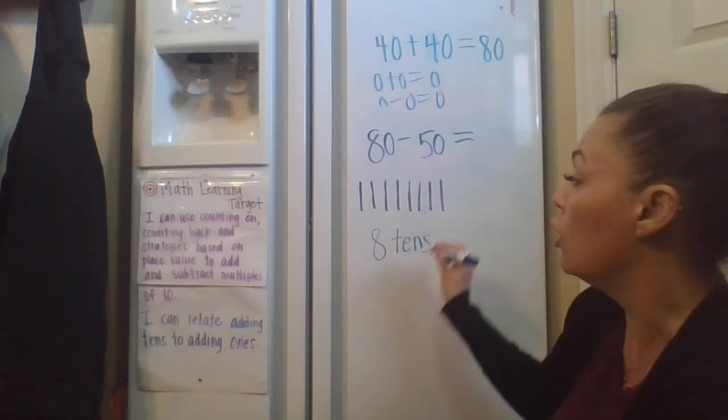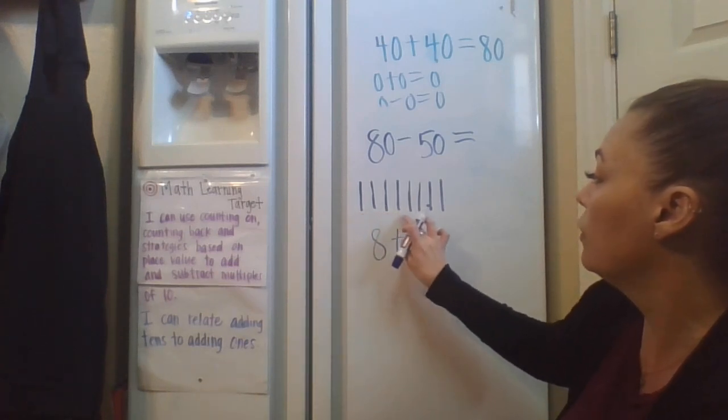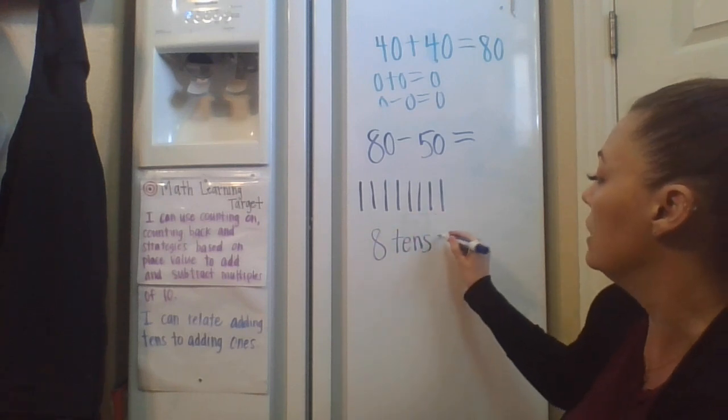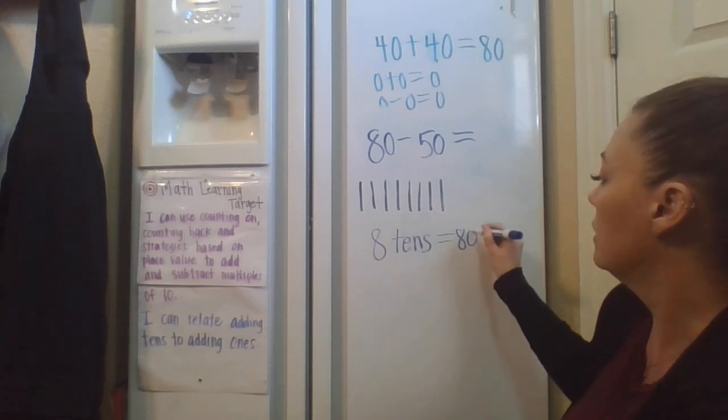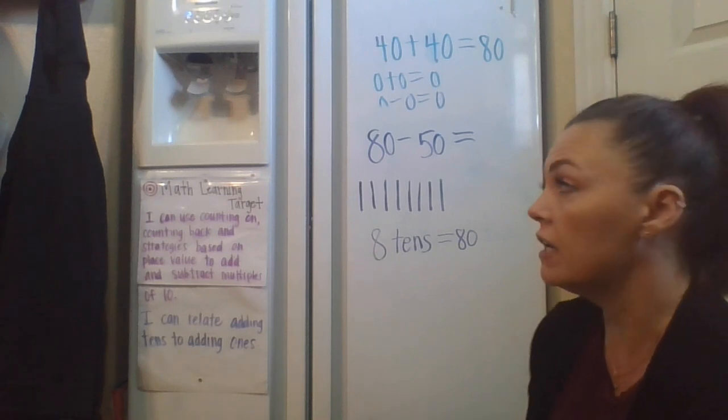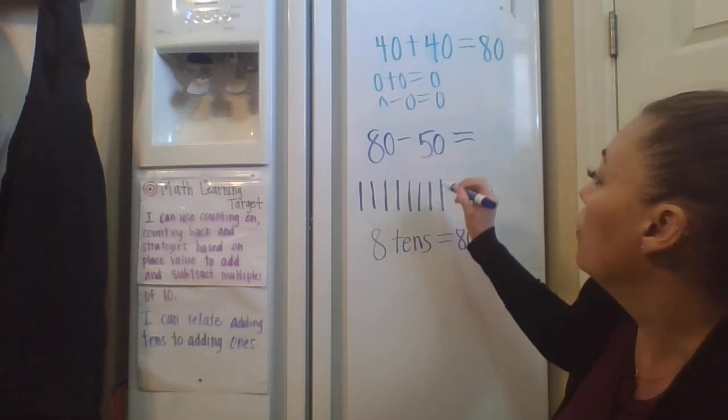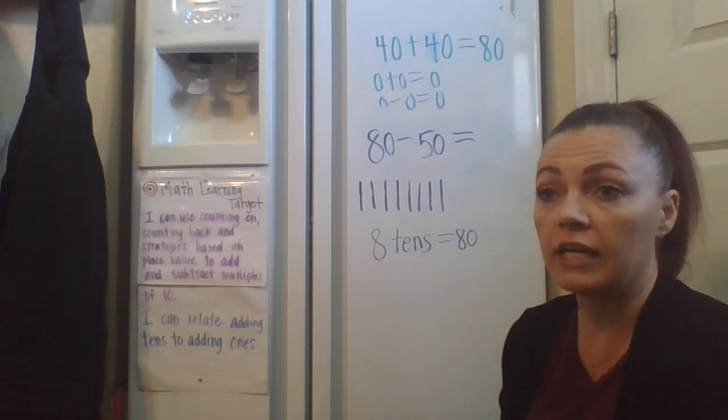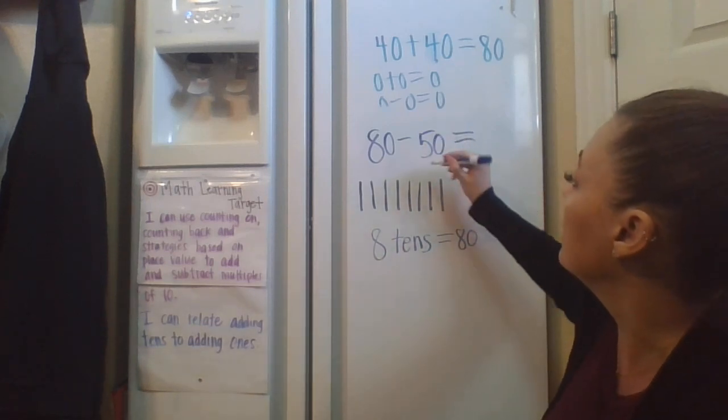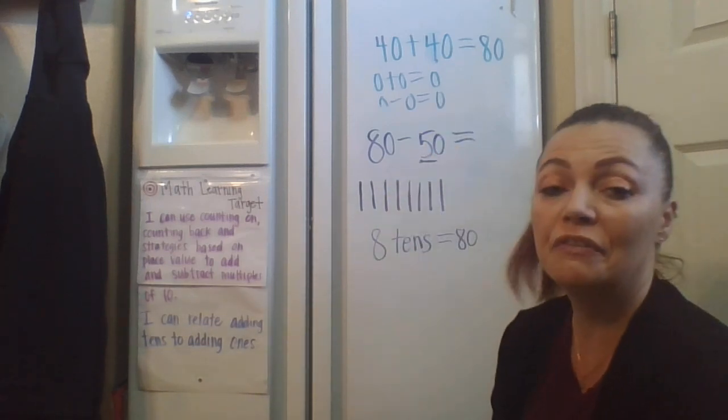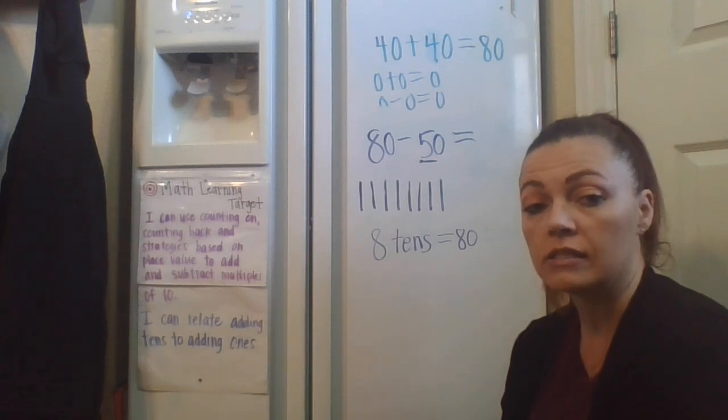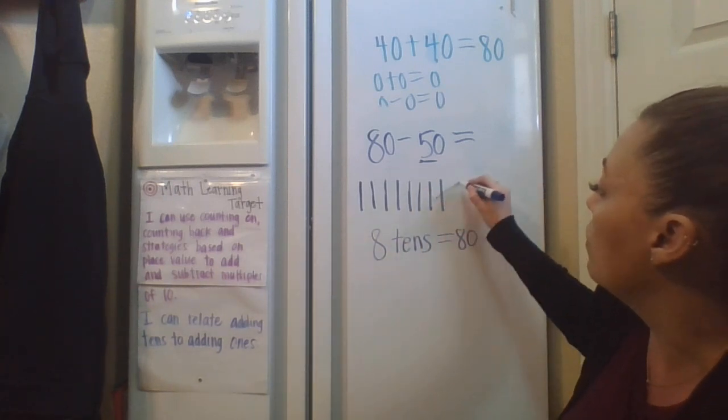And 8 tens we know is 10, 20, 30, 40, 50, 60, 70, 80. 8 tens is 80, right? And we want to subtract 50 of them. So that's not subtracting 50 lines, right? That would be subtracting five of our tens or five lines. So we could cross them out. 1, 2, 3, 4, 5.